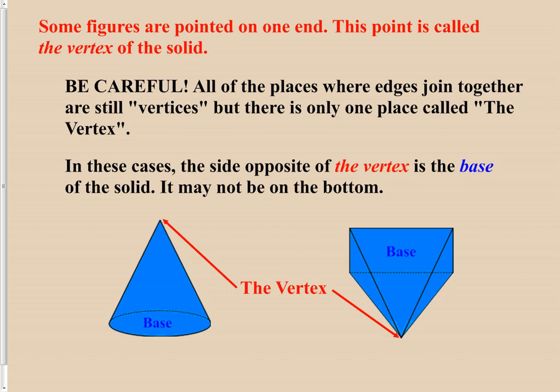It's not to be confused with the other vertices of the solid. Every corner point on your solid is a vertex, and if you add them up, you have a total number of vertices. However, there is only one location in the figure that may be called the vertex. Make sure you have a clear understanding of the difference between the number of vertices and the location of the vertex.